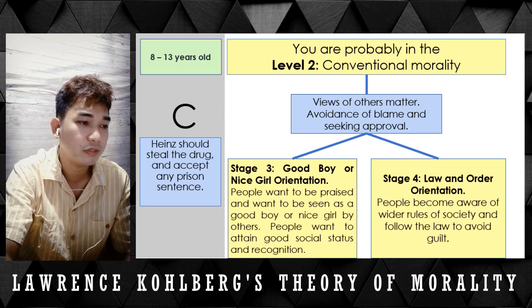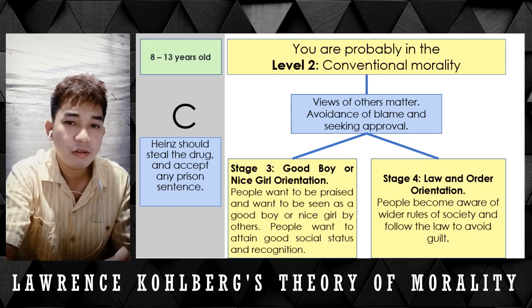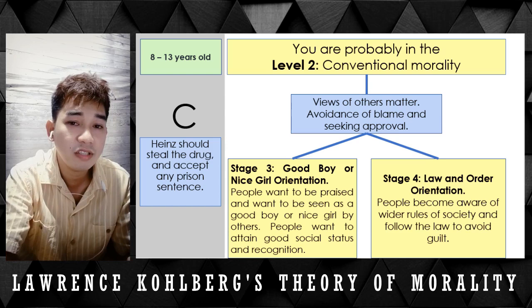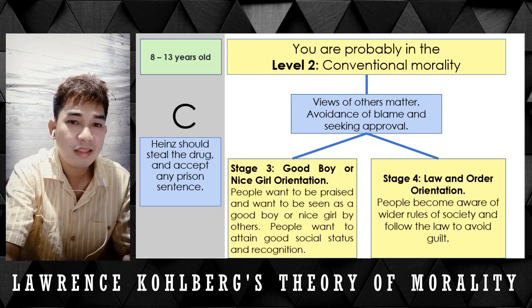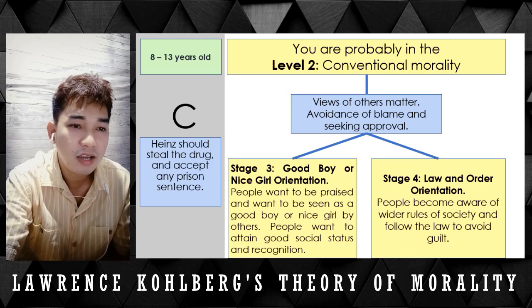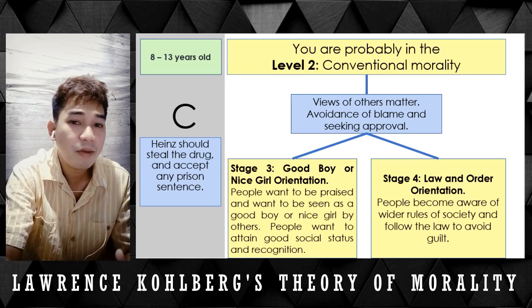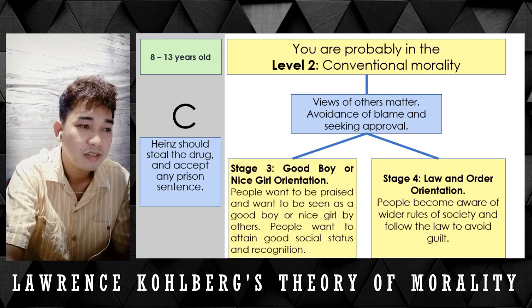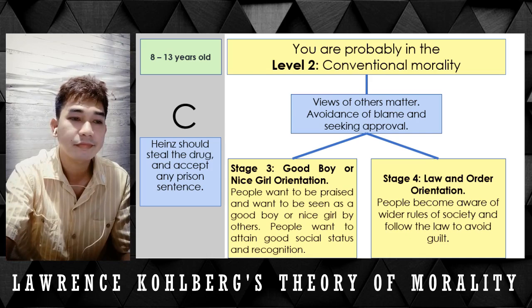Stage 3 is good boy or nice girl orientation. People want to be praised and seen as a good boy or nice girl by others. They want to attain good social status and recognition. In the case of Heinz, he stole the drug thinking that people around him would see his act as heroic. If he had not done it, people might think he is a bad person. By doing it, those who know him socially would think he is kind and admirable — that he did it out of love for his wife. That is Stage 3, good boy or nice girl orientation.